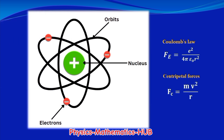According to classical physics, the hydrogen atom should collapse in an incredibly short time, but clearly that doesn't happen. So what's wrong with the classical model? Let's find out.